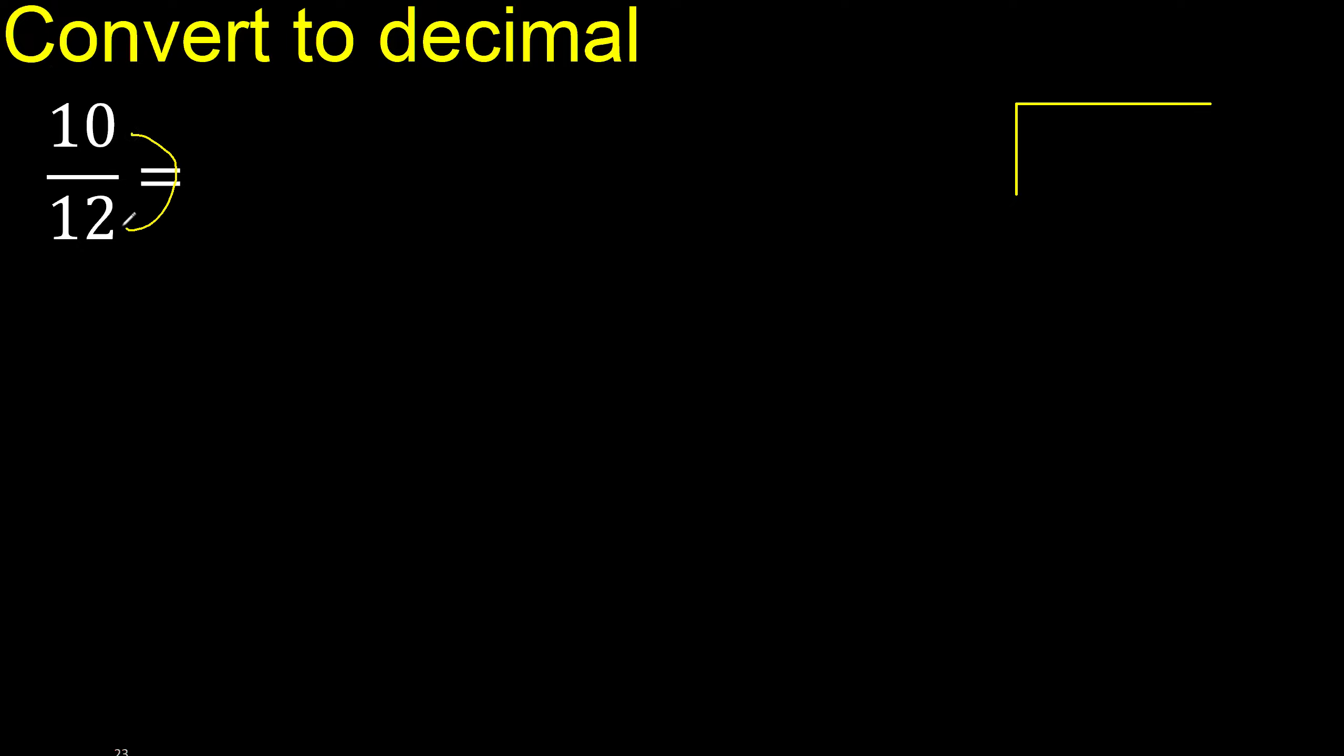10 divided by 12. 10 is less, therefore always complete with 0. Here, 0 point.